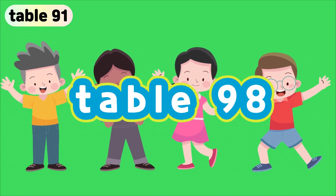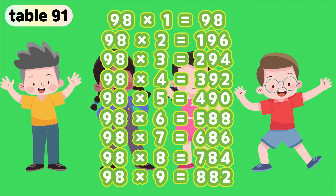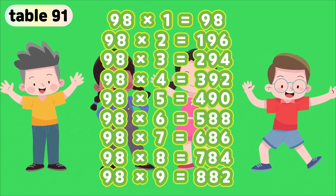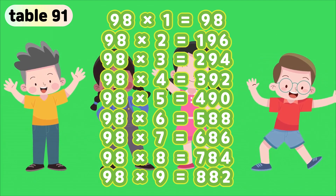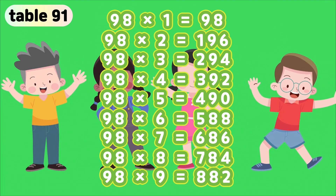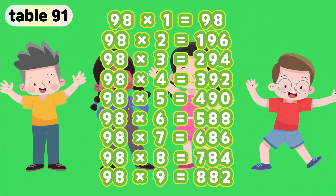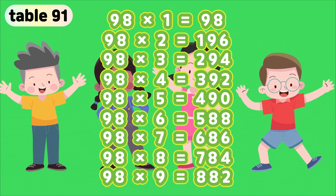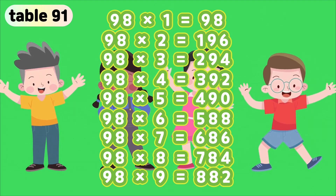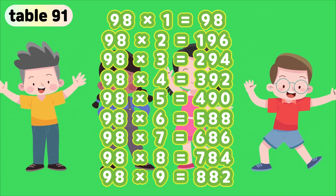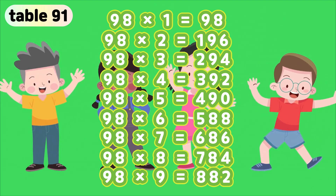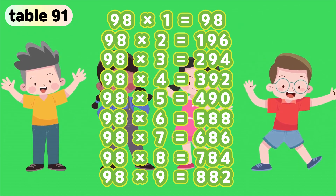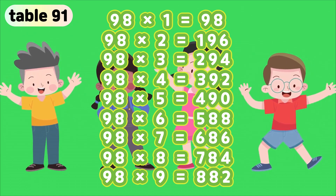Table 98. 98 times 1 is 98. 98 times 2 is 196. 98 times 3 is 294. 98 times 4 is 392. 98 times 5 is 490. 98 times 6 is 588. 98 times 7 is 686. 98 times 8 is 784. 98 times 9 is 882.